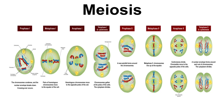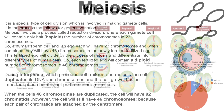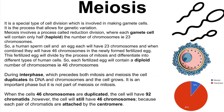Hi everyone, today we will be discussing meiosis. Meiosis is a special type of cell division which is involved in making gamete cells. It is the process that allows for genetic variation.